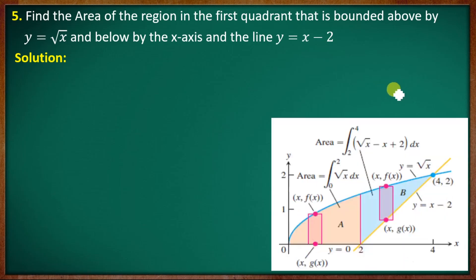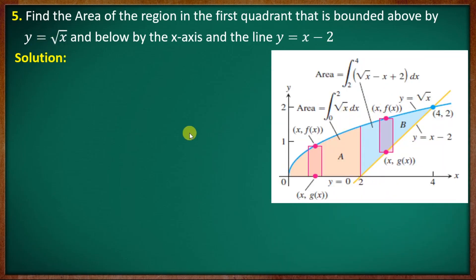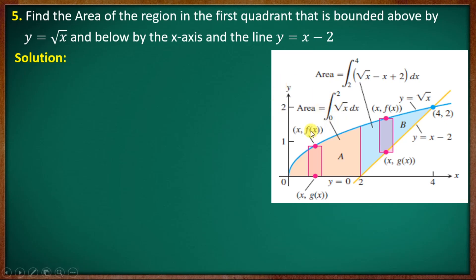Let's look at the graph. Here we have y equal to x minus 2. The graph is bounded. The area is bounded. If we consider 0 to 2 in the graph, and 2 to 4 in the graph, this is the area between the graphs.